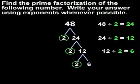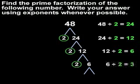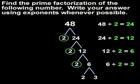But since 6 is not prime, we draw two new branches. Since 6 divided by 2 is 3, we know that 2 and 3 are factors of 6. So we write 2 and 3 at the bottom of the branches. Next, we circle any prime factors in the factor tree. Since both 2 and 3 are prime, we circle 2 and 3.